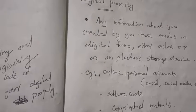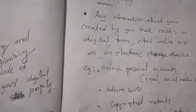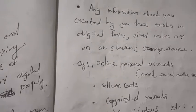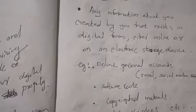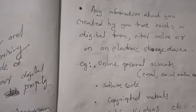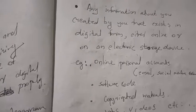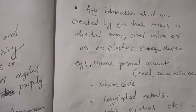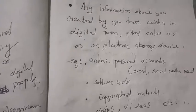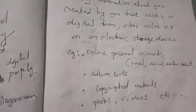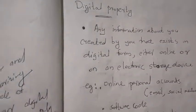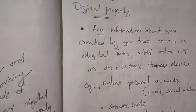Examples of digital properties include your accounts — email accounts, social media accounts like Facebook, Gmail, Yahoo, WhatsApp, Instagram — then any software you develop and save in digital form, your copyrighted materials, your photos, videos, etc. Everything of this nature is treated as a digital property.